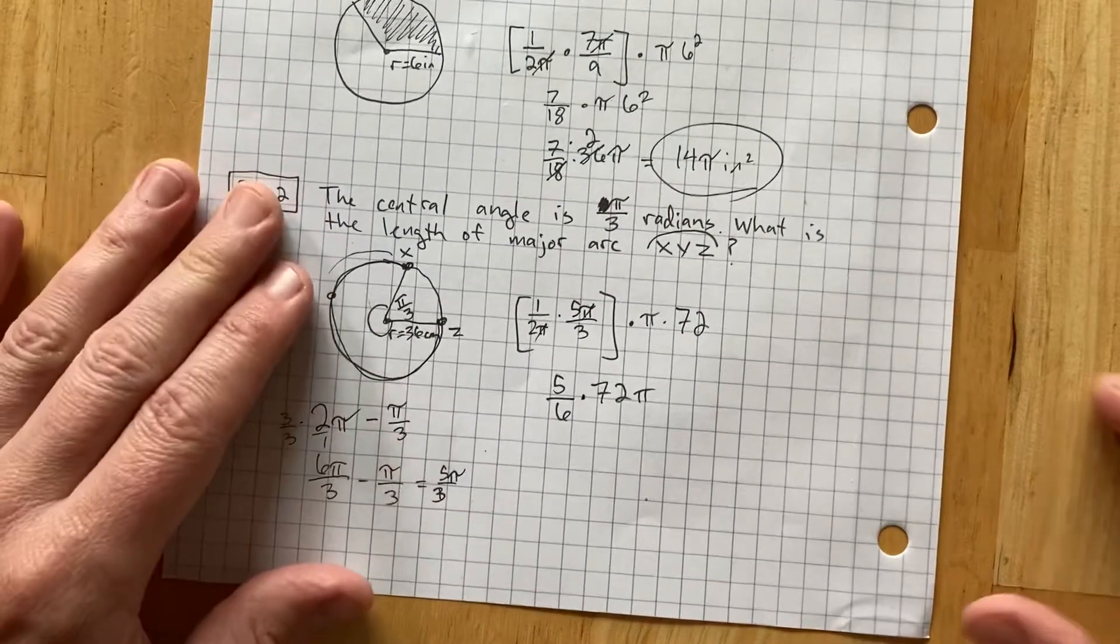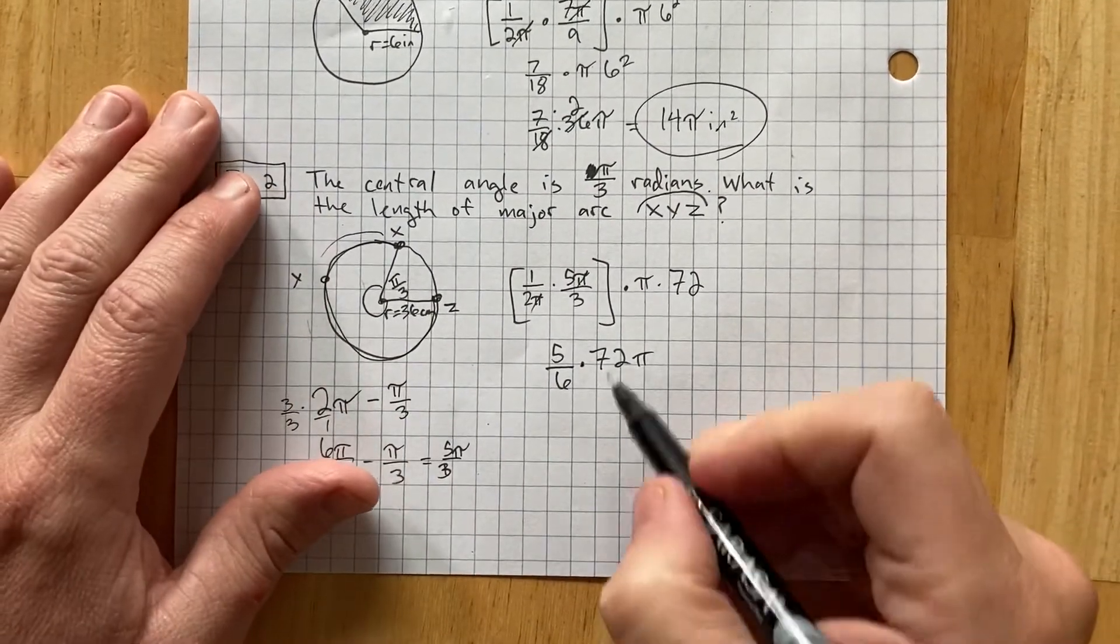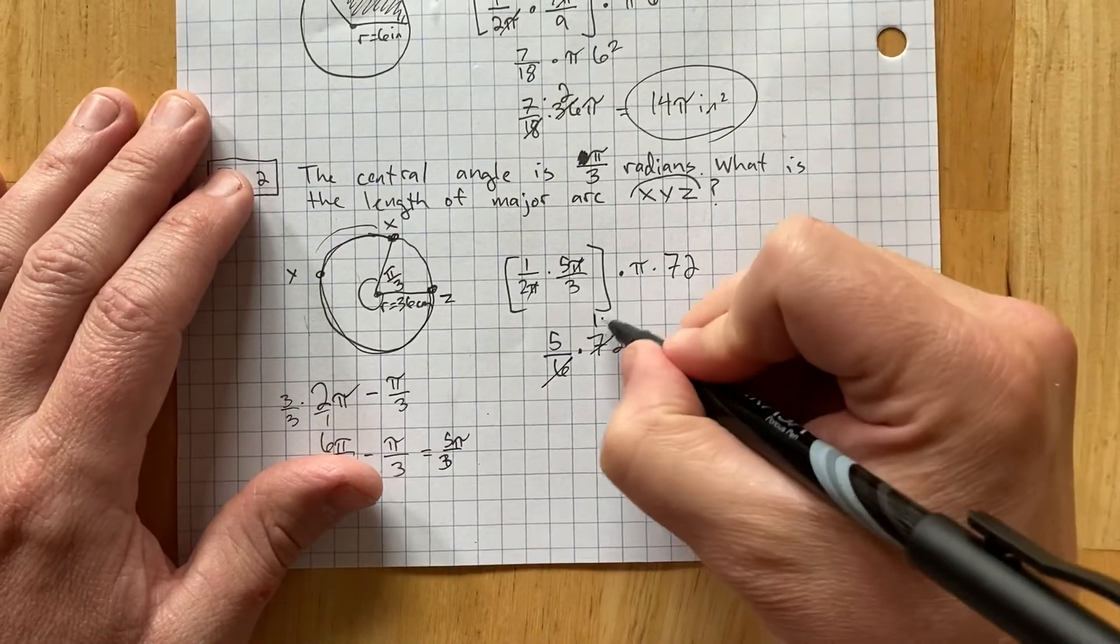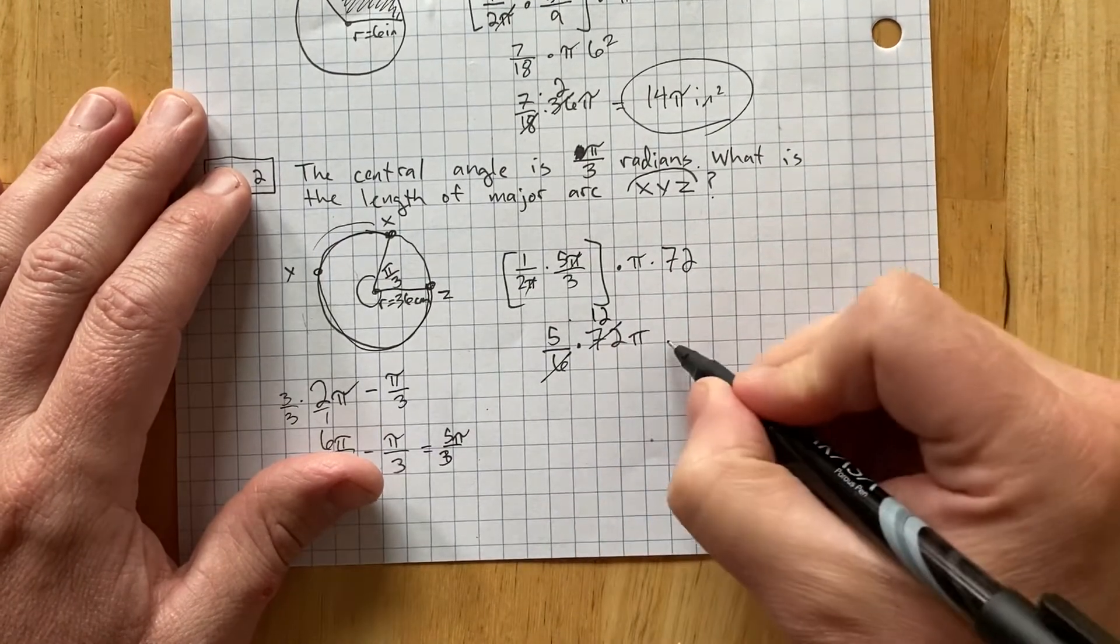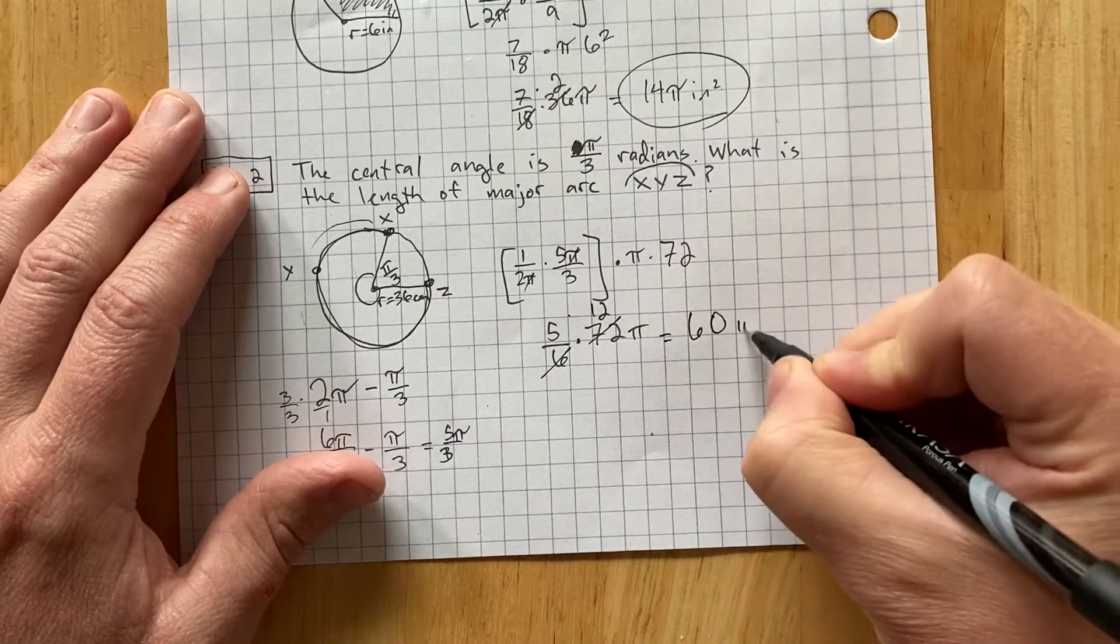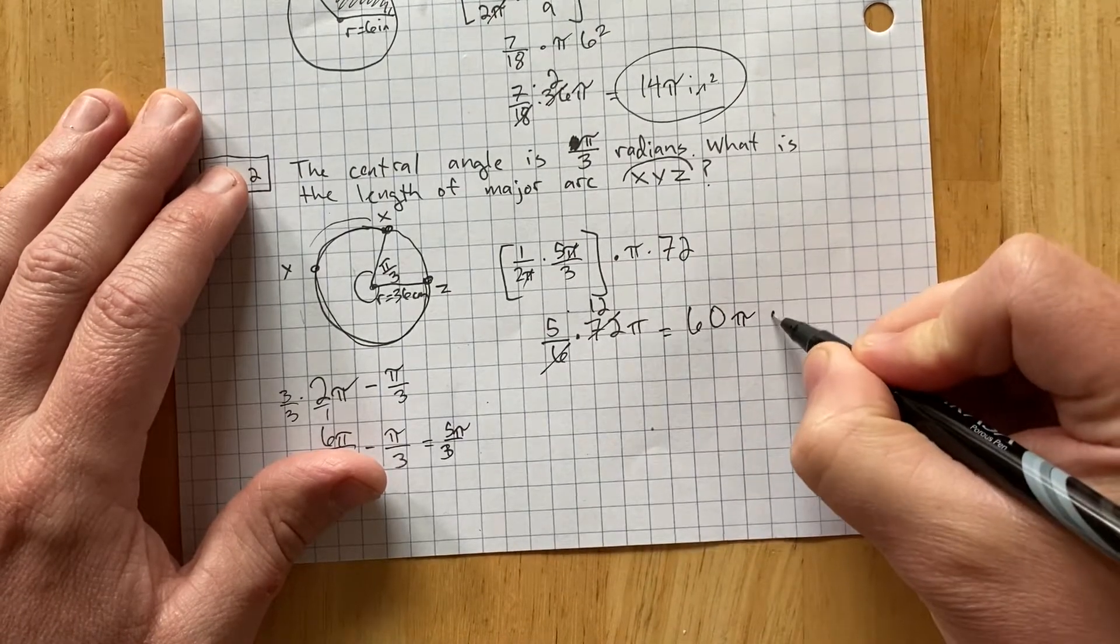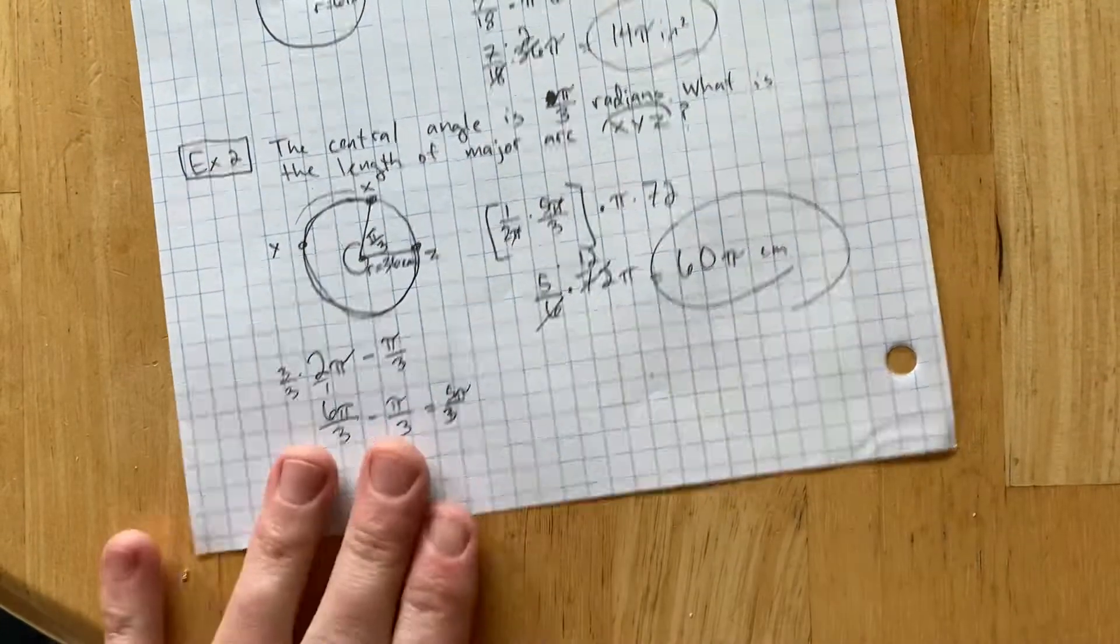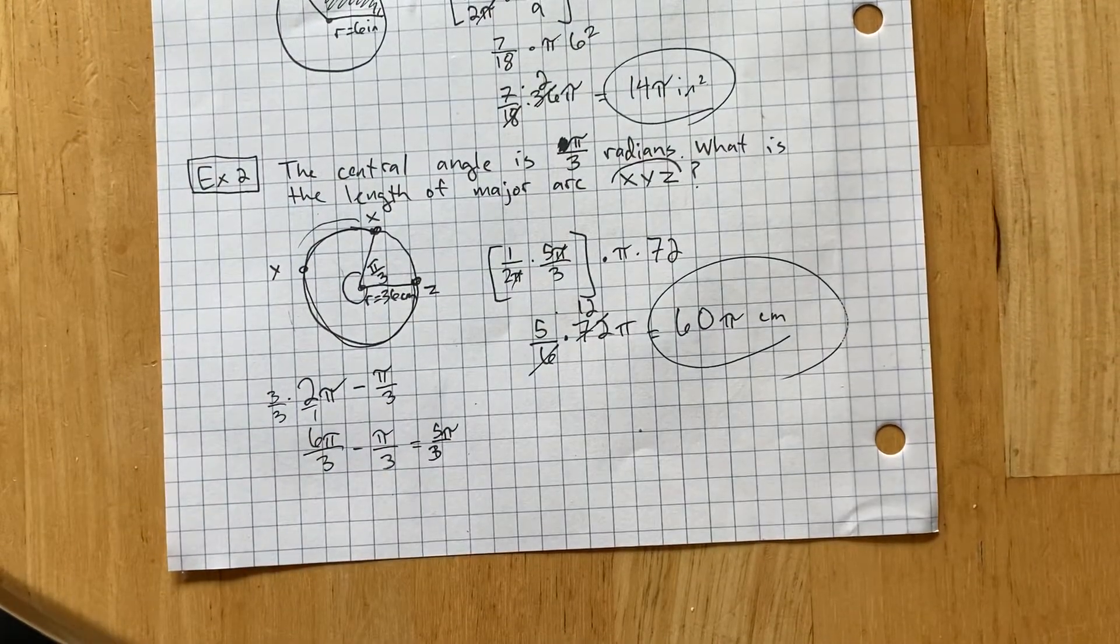Sorry, I have to keep repositioning my phone. It's moving around a lot. 72 divided by 6 is 12. And 5 times 12 is 60. So, the answer to this one is 60 pi centimeters. Not square centimeters, just centimeters. So, hopefully, you can now figure out how to solve those radian puzzles that I gave you to do.